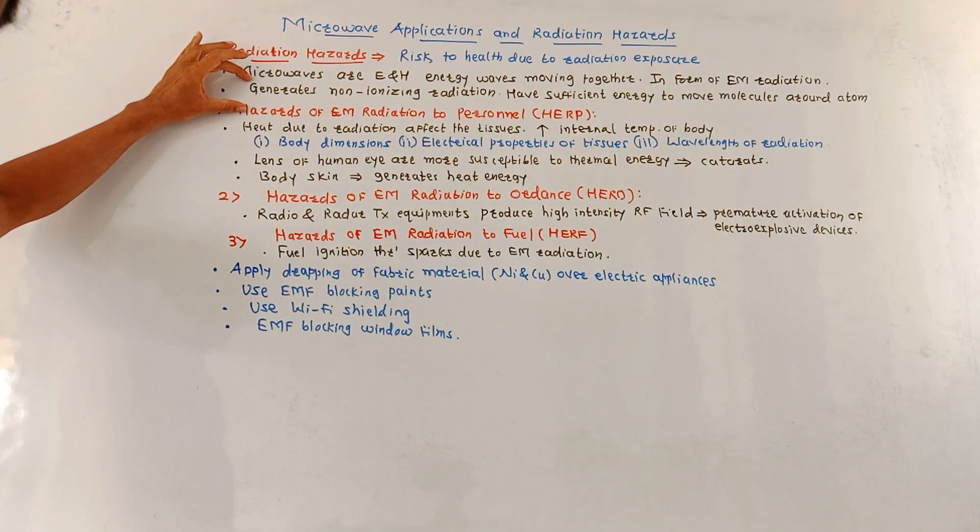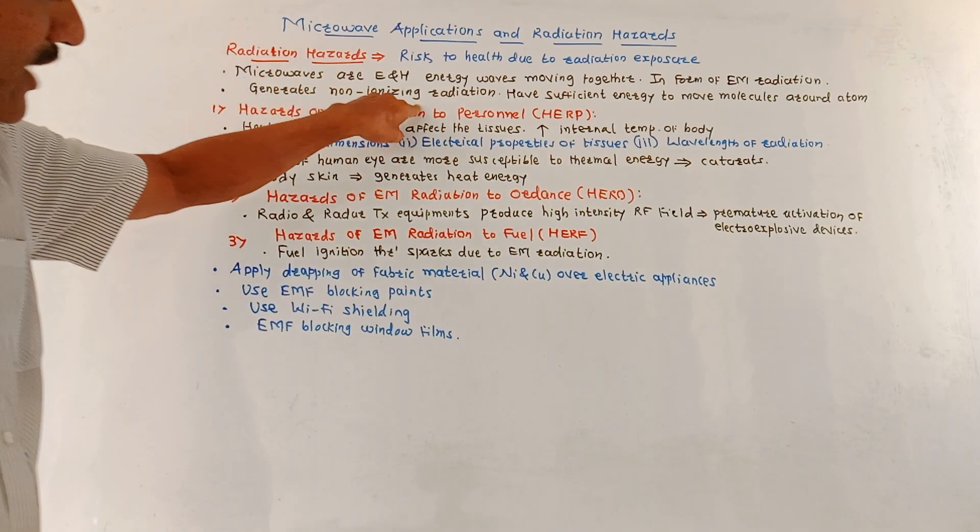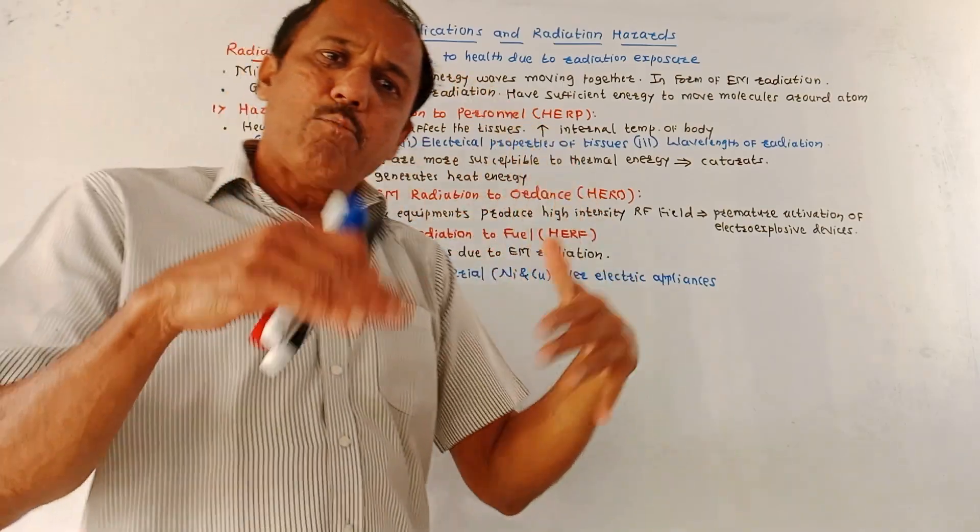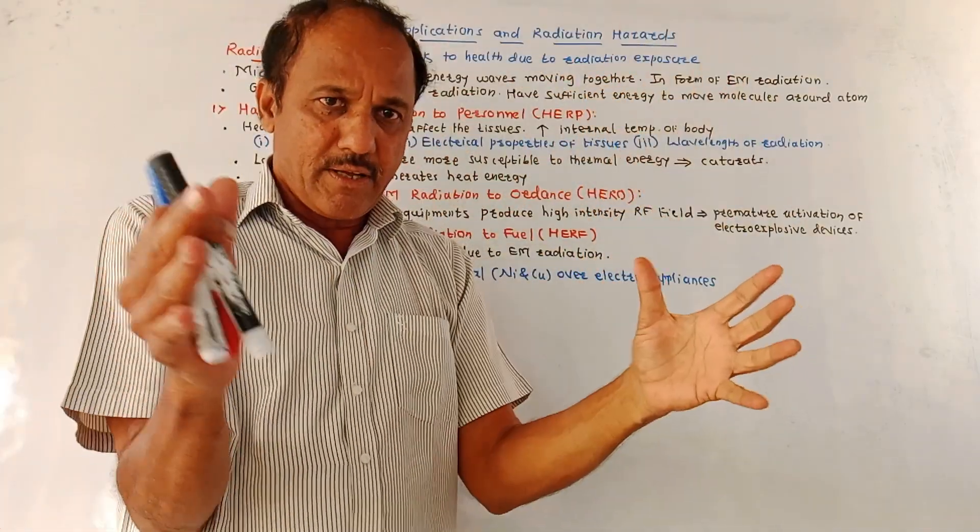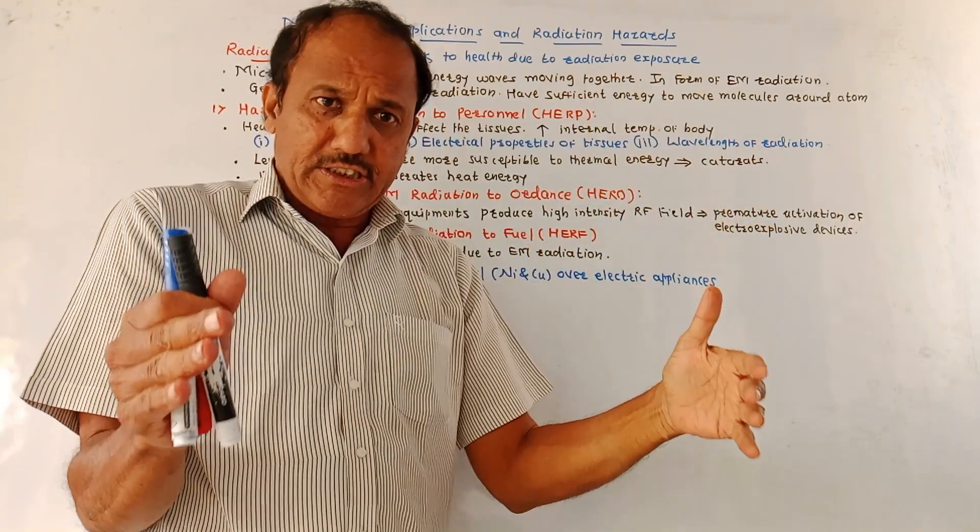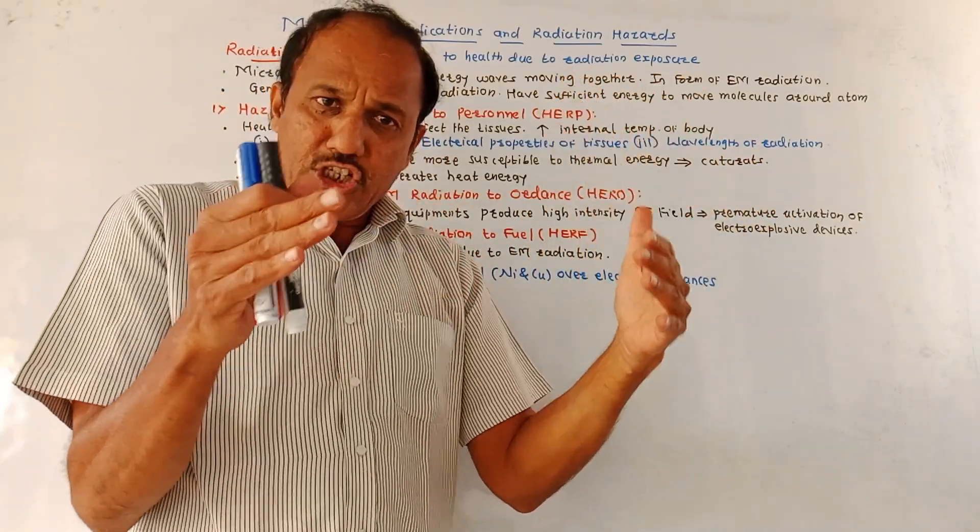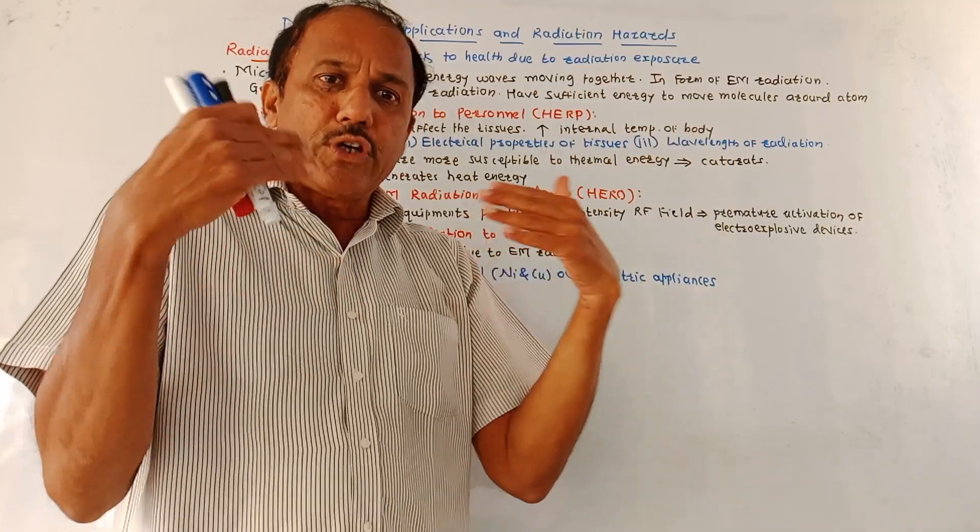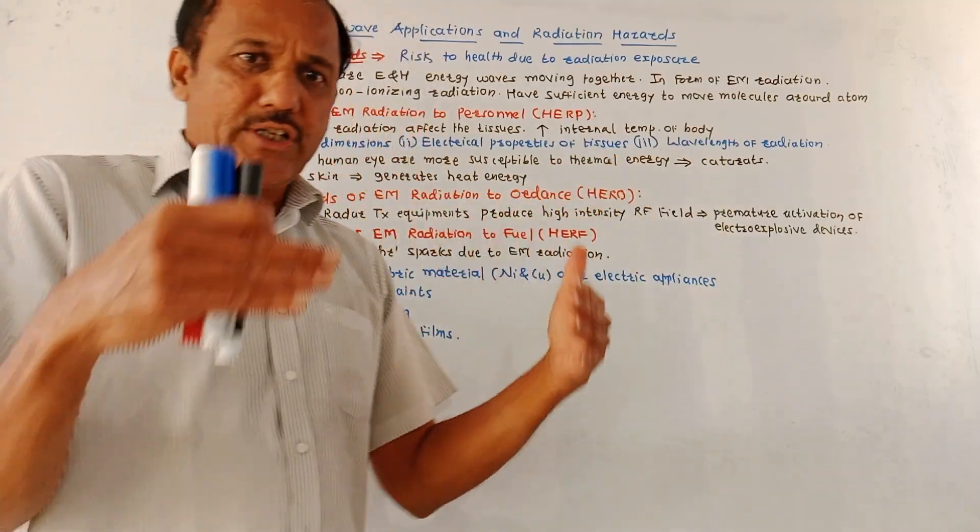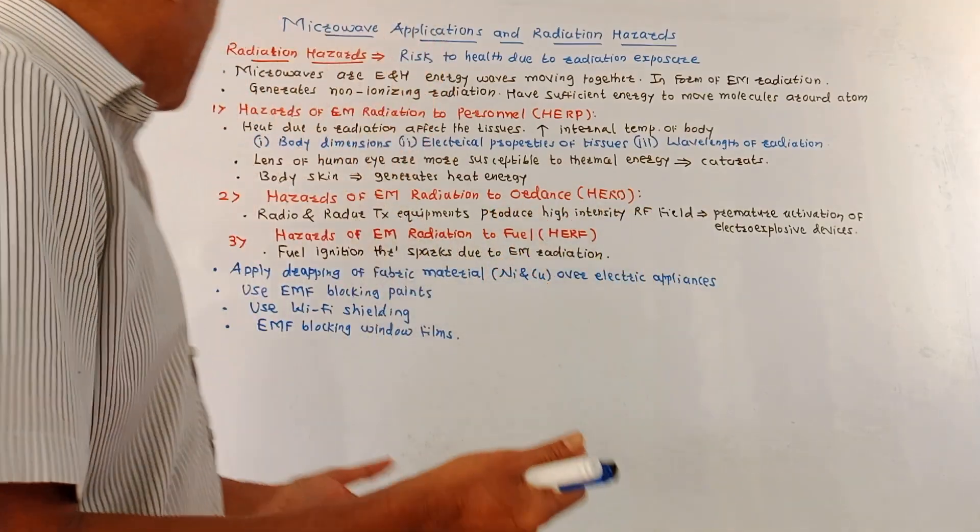The major characteristic of this radiation is it generates non-ionizing radiation. It has sufficient energy to move the molecules around the atom. Because of these characteristics, the microwave radiation is used for cooking of food in case of microwave oven, as well as in many industrial applications.